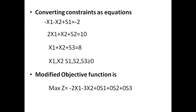Now the constraints are converted to equations by adding slack variables. The first constraint becomes minus x1 minus x2 plus S1 equals minus 2. The second constraint: 2x1 plus x2 plus S2 equals 10. The third constraint: x1 plus x2 plus S3 equals 8. The non-negativity condition is x1, x2, S1, S2, S3 greater than or equal to 0. The modified objective function is: maximize Z equals minus 2x1 minus 3x2 plus 0·S1 plus 0·S2 plus 0·S3.